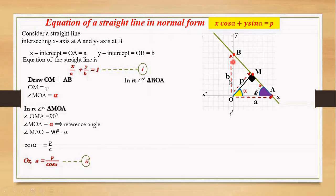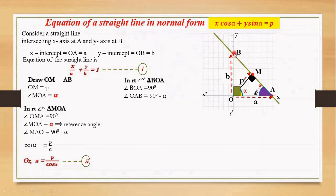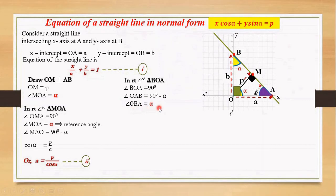Now in right angle triangle BOA, angle BOA equals to 90 degrees. We already calculated that angle MAO equals to 90 degrees minus alpha. In triangle BOA, angles A and B are complementary, so since angle A equals to 90 degrees minus alpha, we have angle OBA equals to alpha.